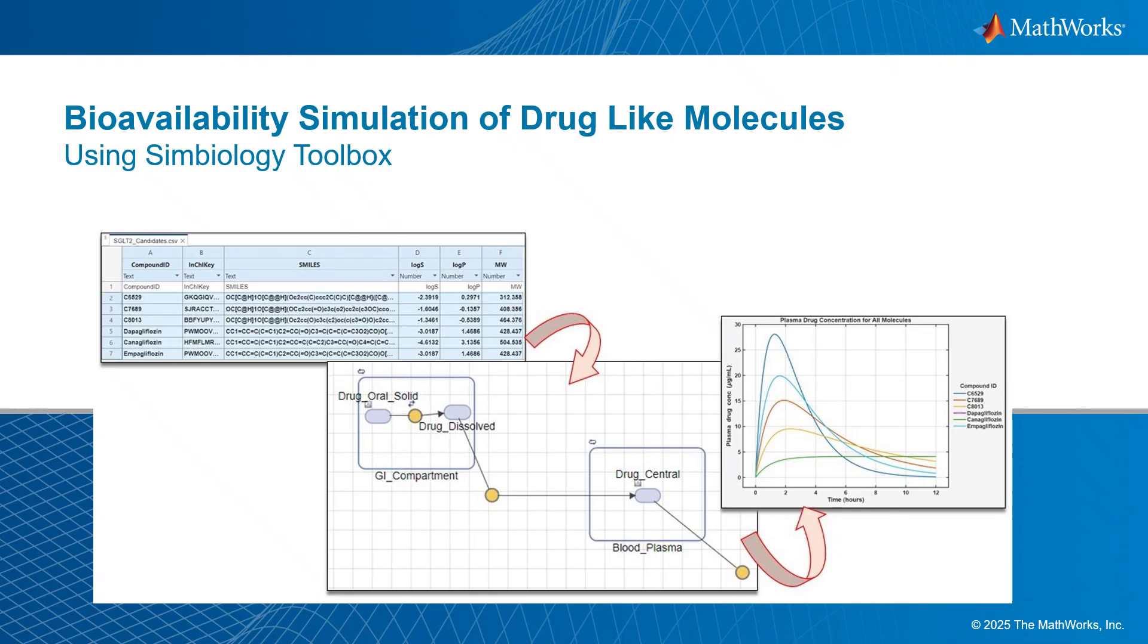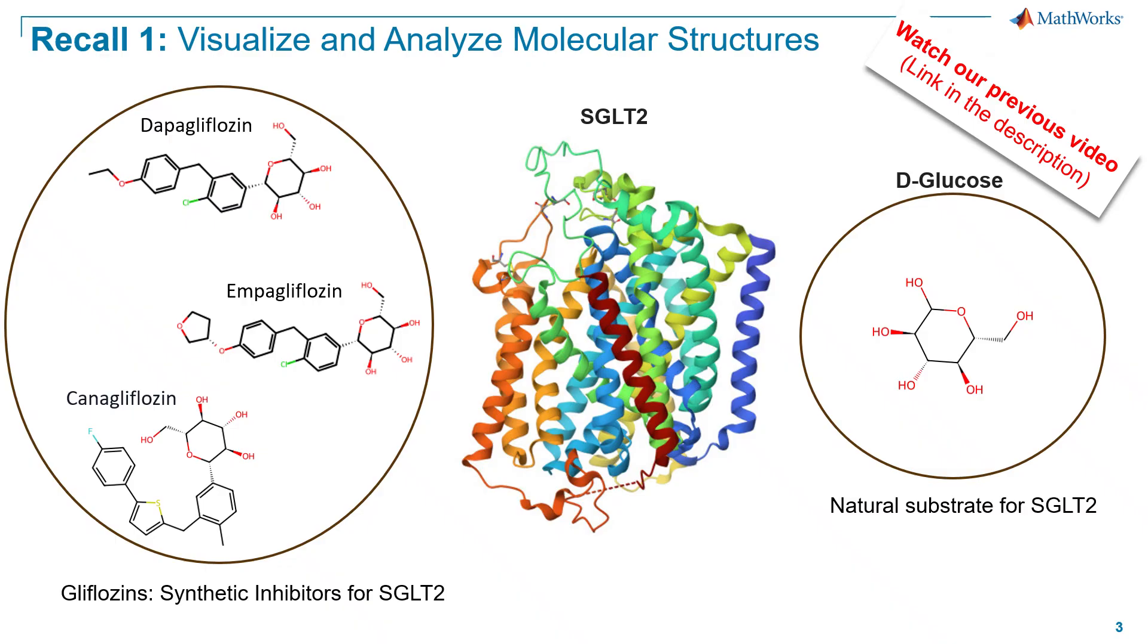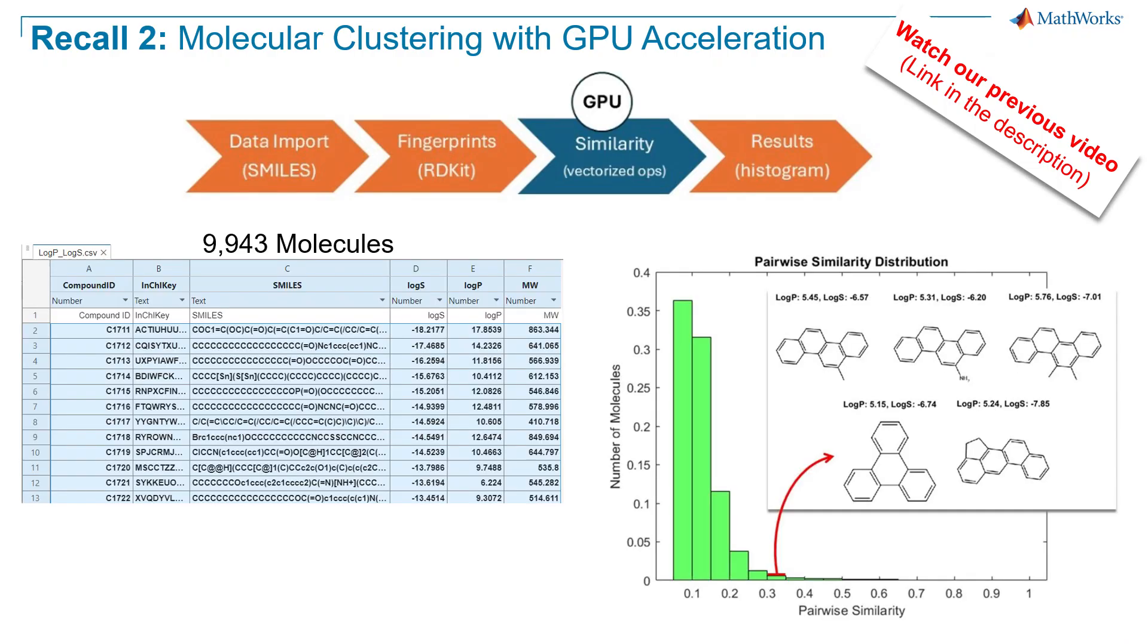If you haven't already, please watch our first video on how to visualize and analyze molecular structure. In that video we learned how to visually inspect the structural similarities between D-glucose and gliflozins as synthetic inhibitors for the sodium glucose co-transporter 2 (SGLT2) protein. Please also check out our previous video on molecular clustering with GPU acceleration. In that video we learned how to replace the visual inspection with GPU accelerated algorithms using RDKit that allows you to analyze the structural similarities between molecules in large databases.